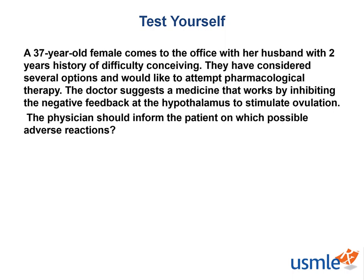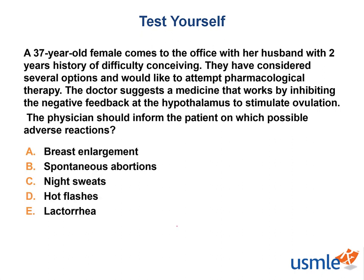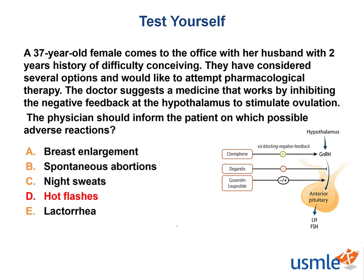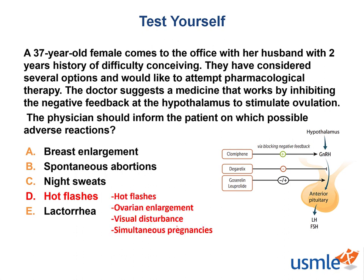Let's go over a test yourself question. A 37-year-old female comes to the office with her husband with a two-year history of difficulty conceiving. They have considered several options and would like to attempt pharmacological therapy. The doctor suggests a medicine that works by inhibiting the negative feedback at the hypothalamus to stimulate ovulation. The physician should inform the patient of which possible adverse reactions? The answer is D, hot flashes. The excessive LH and FSH can lead to adverse reactions such as hot flashes, ovarian enlargement, multiple simultaneous pregnancies, and visual disturbances.